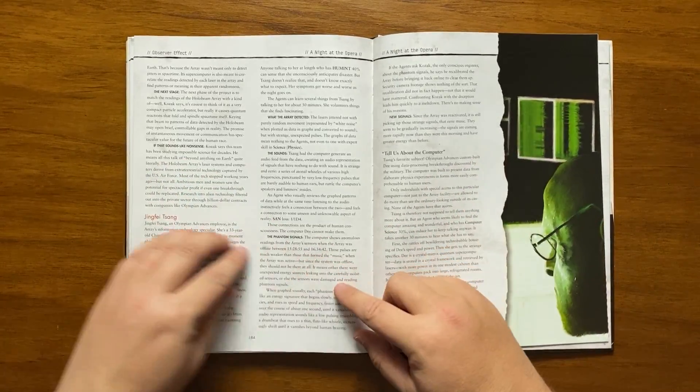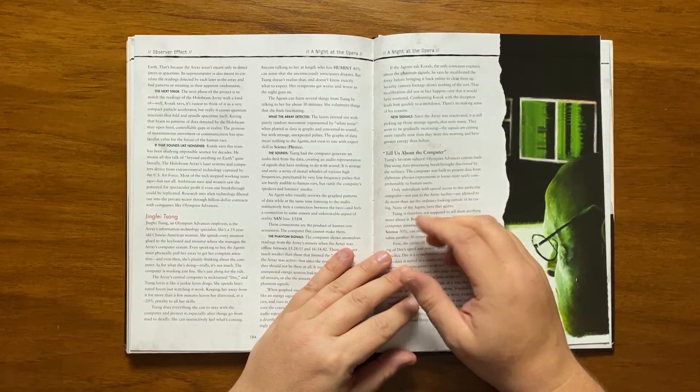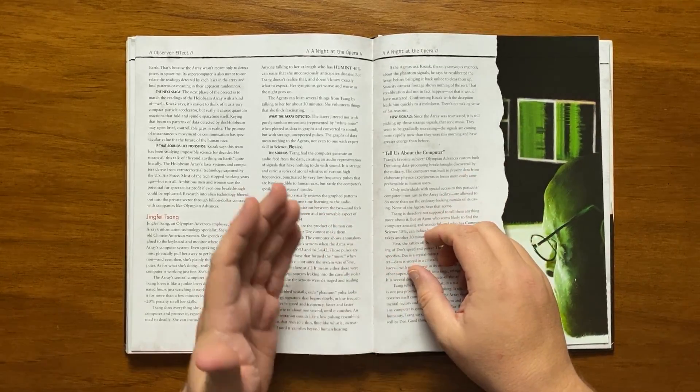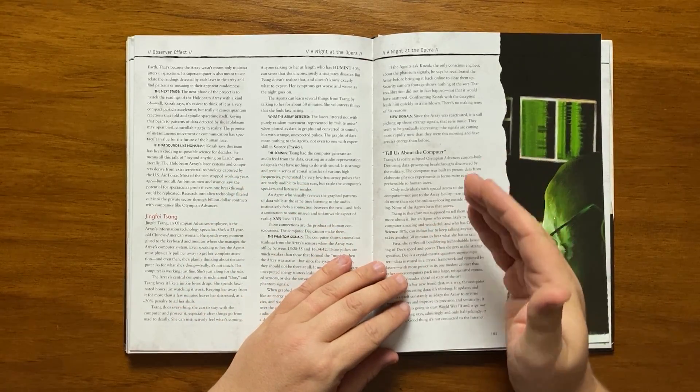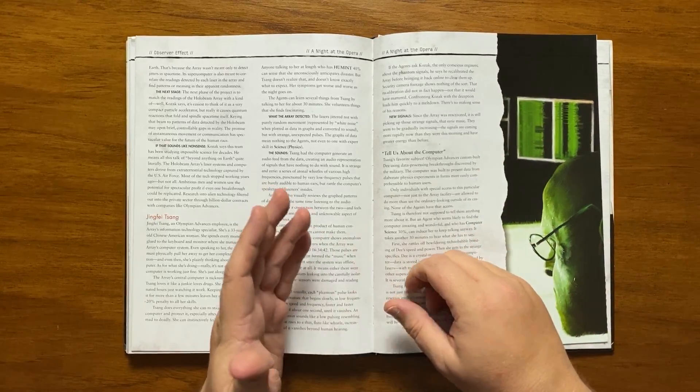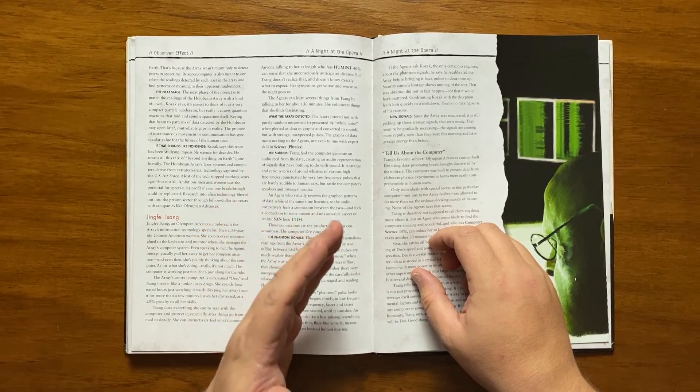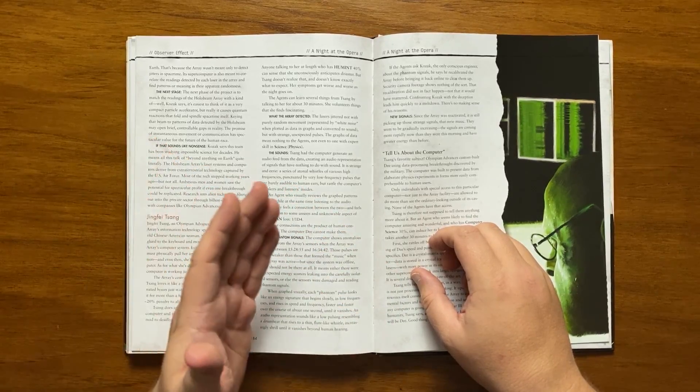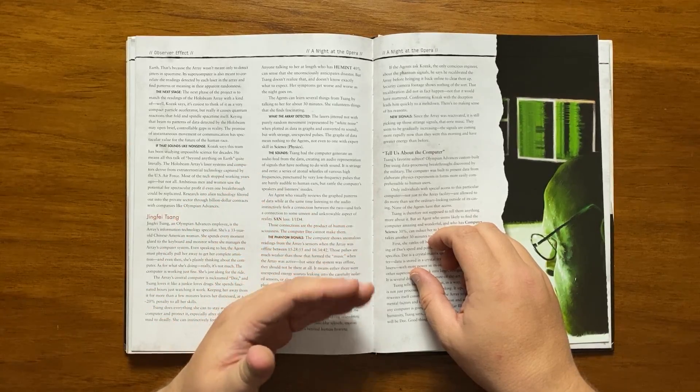It then moves on to Yingfei Sang, an Olympian advances employer who is their IT specialist. She's a 33 year old Chinese American woman who sits in front of her computer all day long. She loves D like a junkie loves drugs and is fascinated by how it works to the point where she will become distressed if separated from it for more than a few minutes at a time. She does everything she can to stay with and protect the computer as she can instinctively feel what is coming. Sang was the person who had degenerated audio feed from the amassed data. Any agent who views the data while listening to the audio will feel a strange connection between the two and there's some San. They will show anomalous readings from the erased sensors when it was offline between 1528 and 1634, much weaker pulses which shouldn't be there as it was offline.